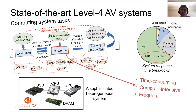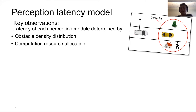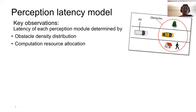Since perception is the most time-consuming module, we want to propose techniques to optimize perception latency. The first technique is a perception latency model, which helps us understand the correlation between perception latency and obstacle distributions. The perception module is responsible for monitoring surrounding obstacles, so most of the latency is spent on processing obstacles. Obstacles can be represented by two variables: obstacle density and obstacle distribution. We also consider computation resource allocation — in our system we have CPU and GPU, and each algorithm runs on either one.